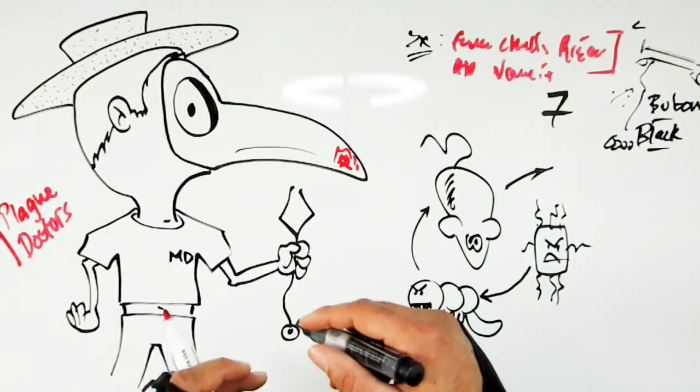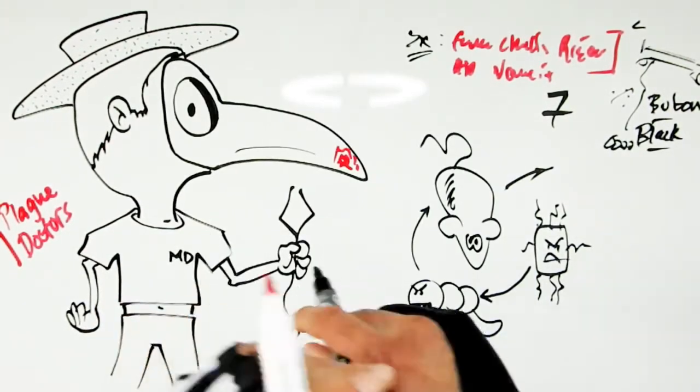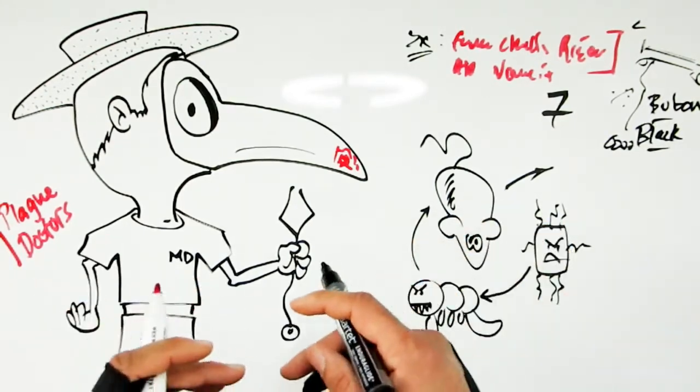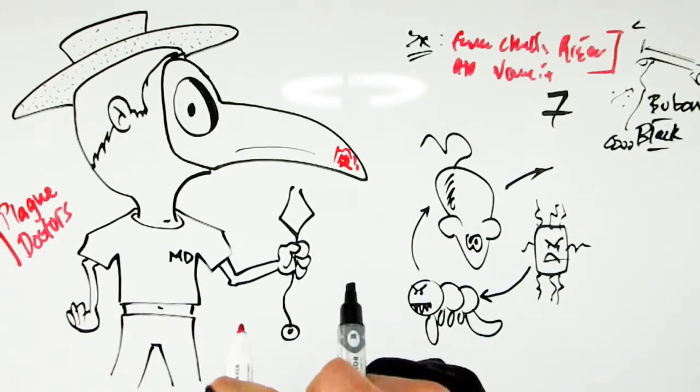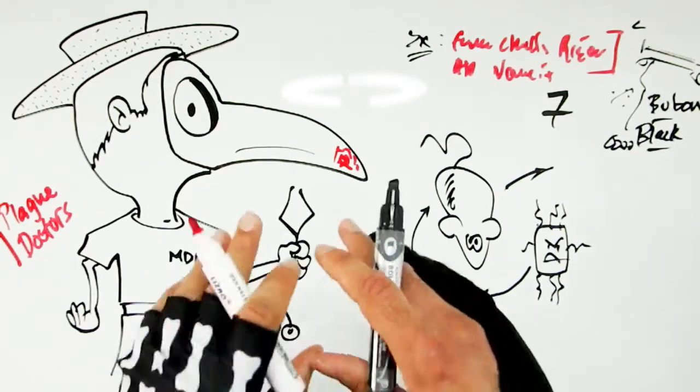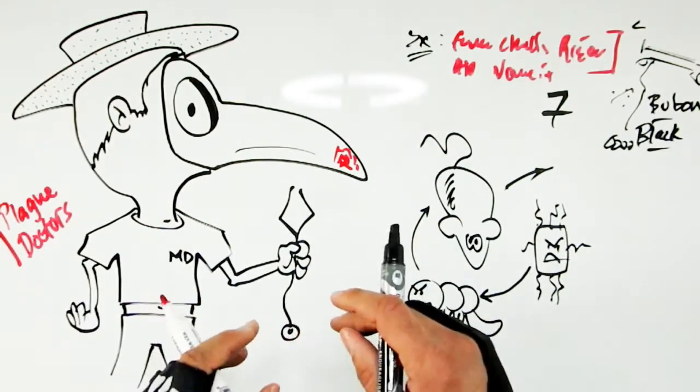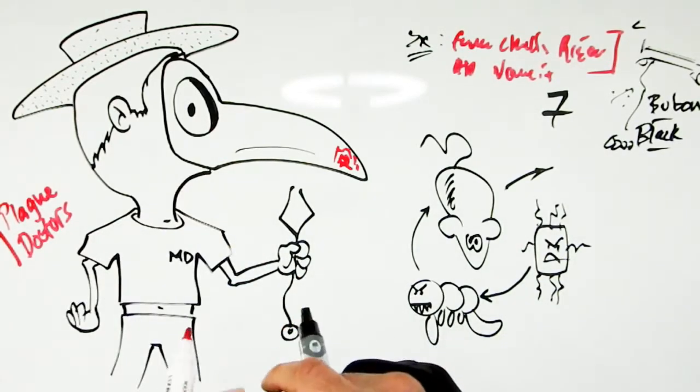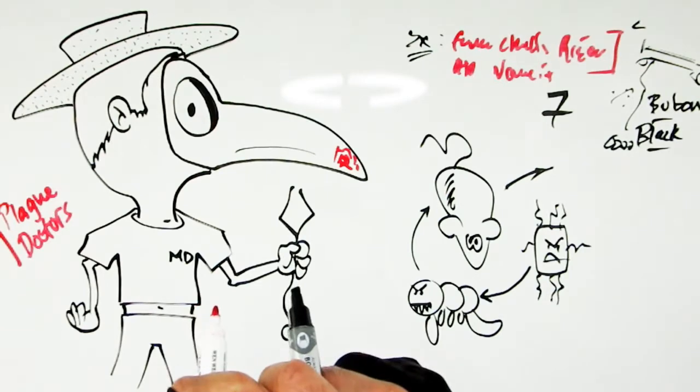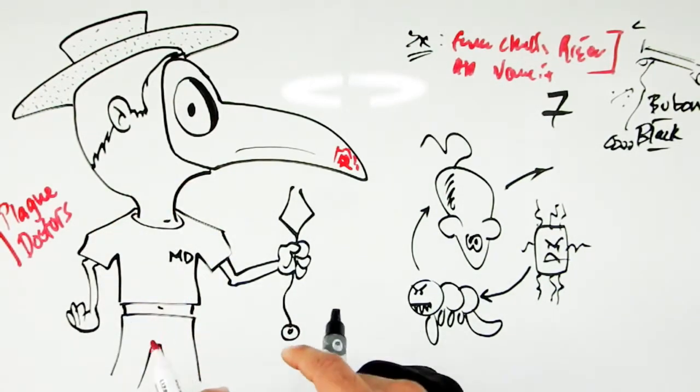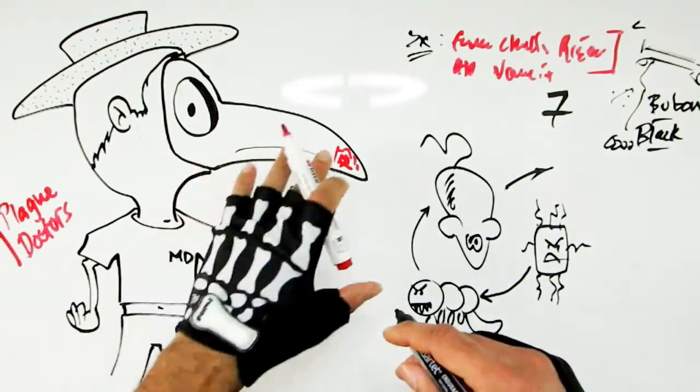So they called them the plague doctors and occasionally you'll still see people wearing these ornate masks for Halloween. You can get them for example on eBay, costume.com etc. If you want your neighbors to really turn their heads next Halloween, just punch in plague doctor on your favorite costume website and you could really get some heads rising next Halloween.